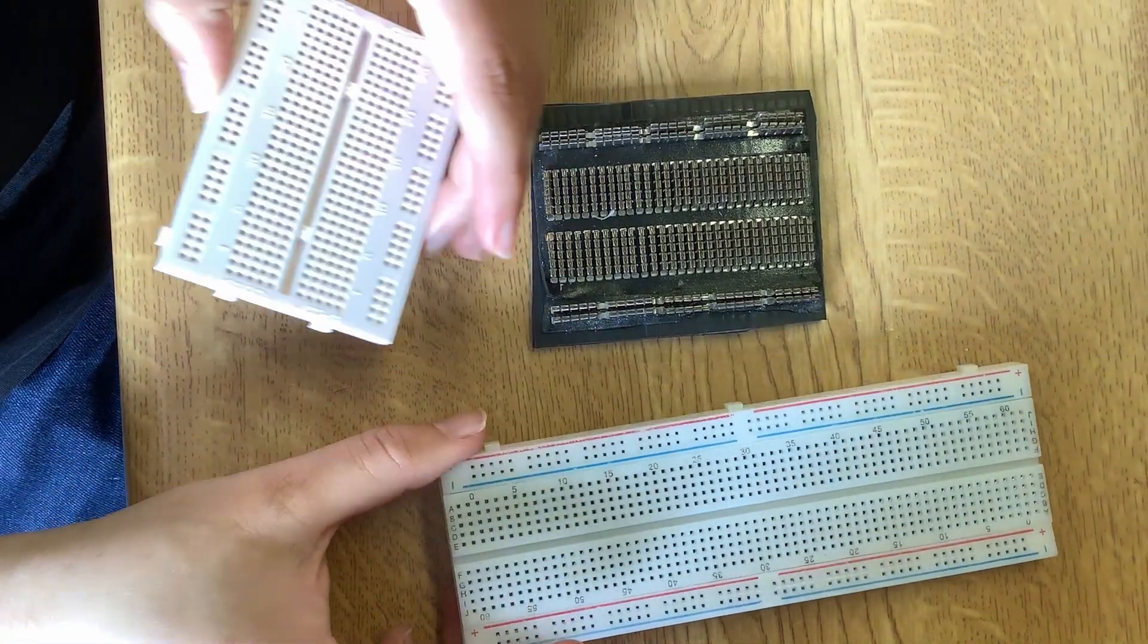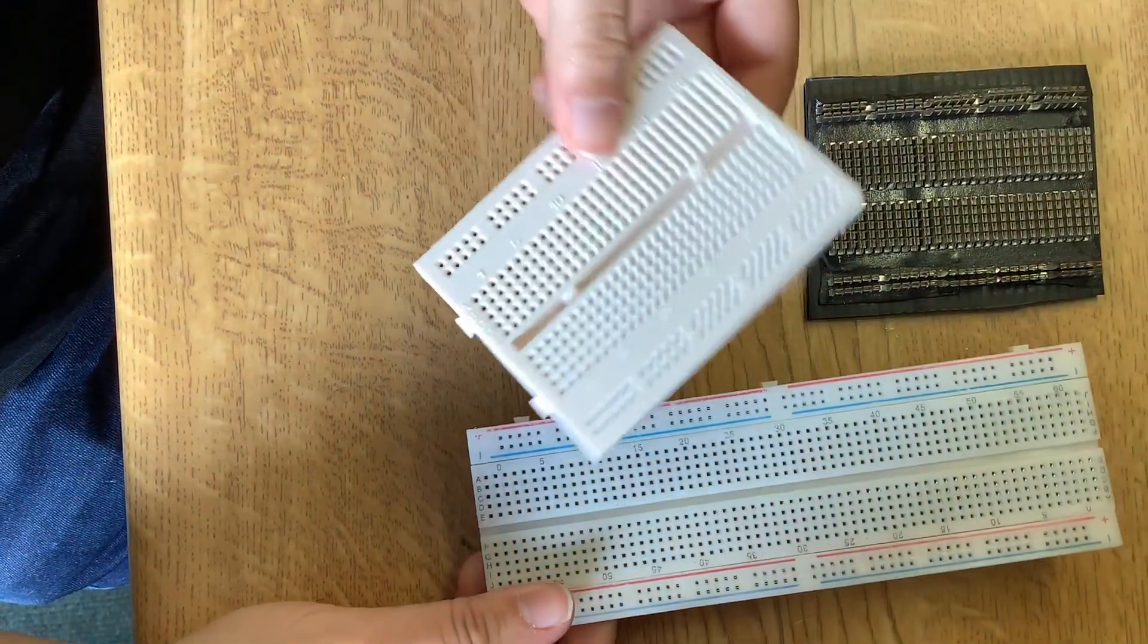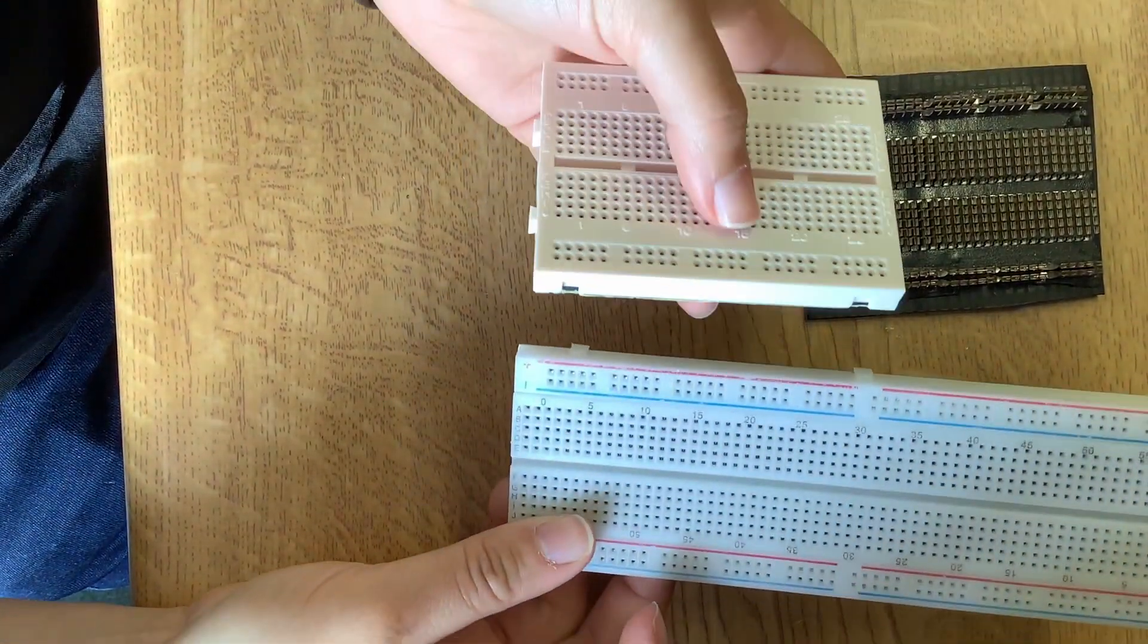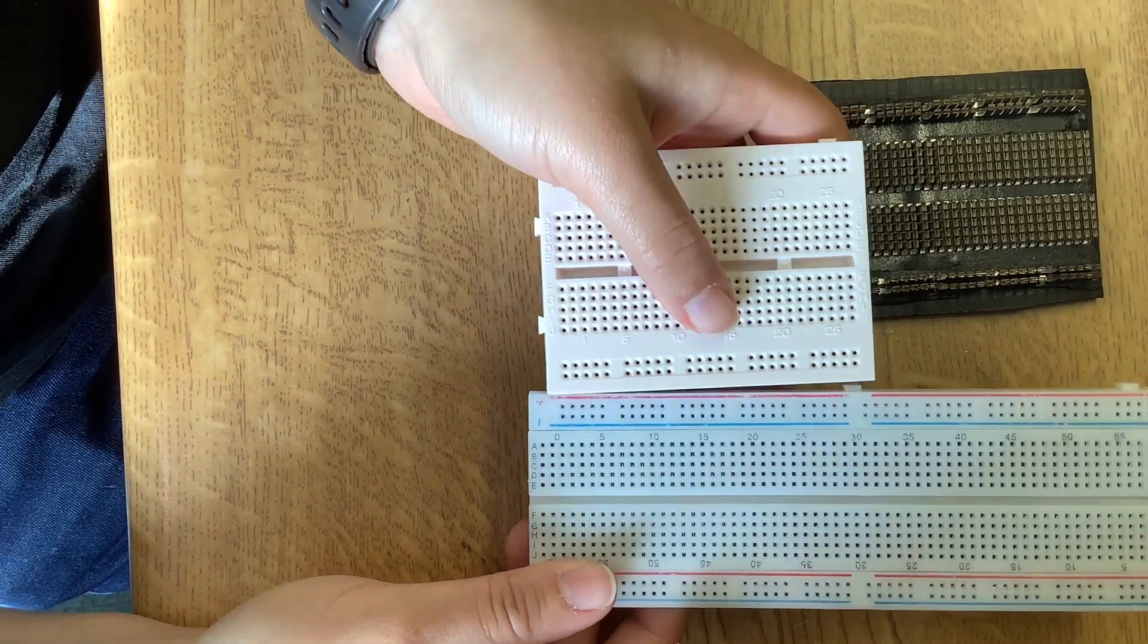Breadboards come in different sizes and this one for example is a small one and you can use it to connect between them and expand your breadboard.